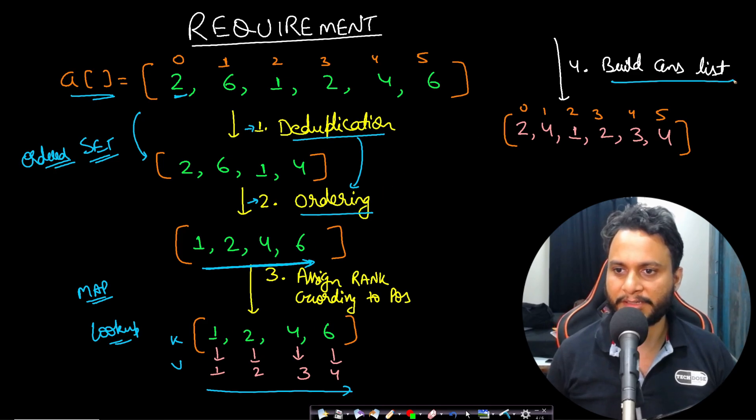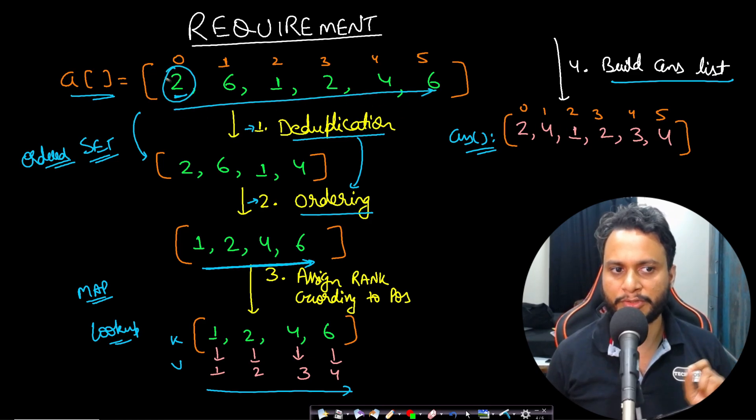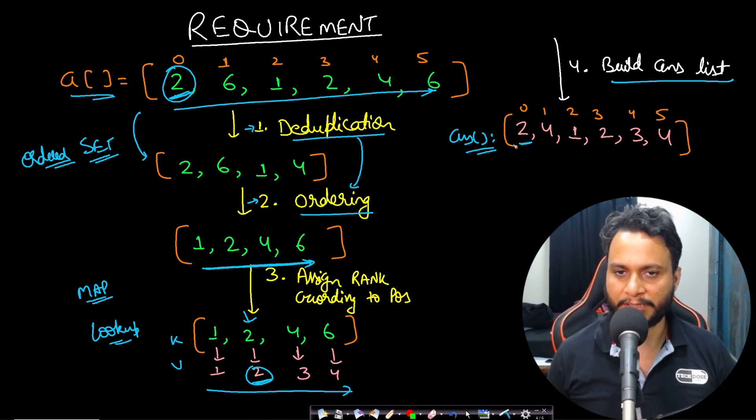After having done this, we will build the answer list. So our answer list will be returned. In this case, these are all the associated ranks for the original array item. So we will be iterating through each of the array item and we will do the lookup. Let's say for two, I will look up in the map and check what is the rank and I will input the rank into our answer list. So this should be my idea.